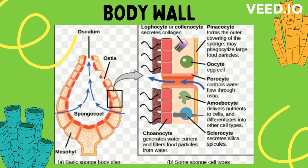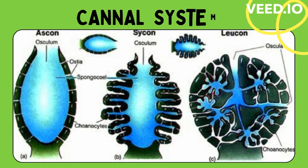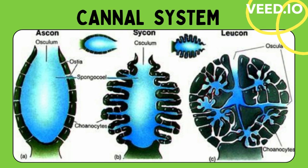Choanocytes are present only in sponges. Between these two layers there is a gelatinous non-cellular mesoglia or mesenchyme. The mesenchyme has many types of amoebocytes. All sponges have a peculiar system of interconnected canals called the canal system, through which a water current is moved, so it is also called the aquiferous system. The central cavity of the canal system is called the spongocoel or paragastric cavity.